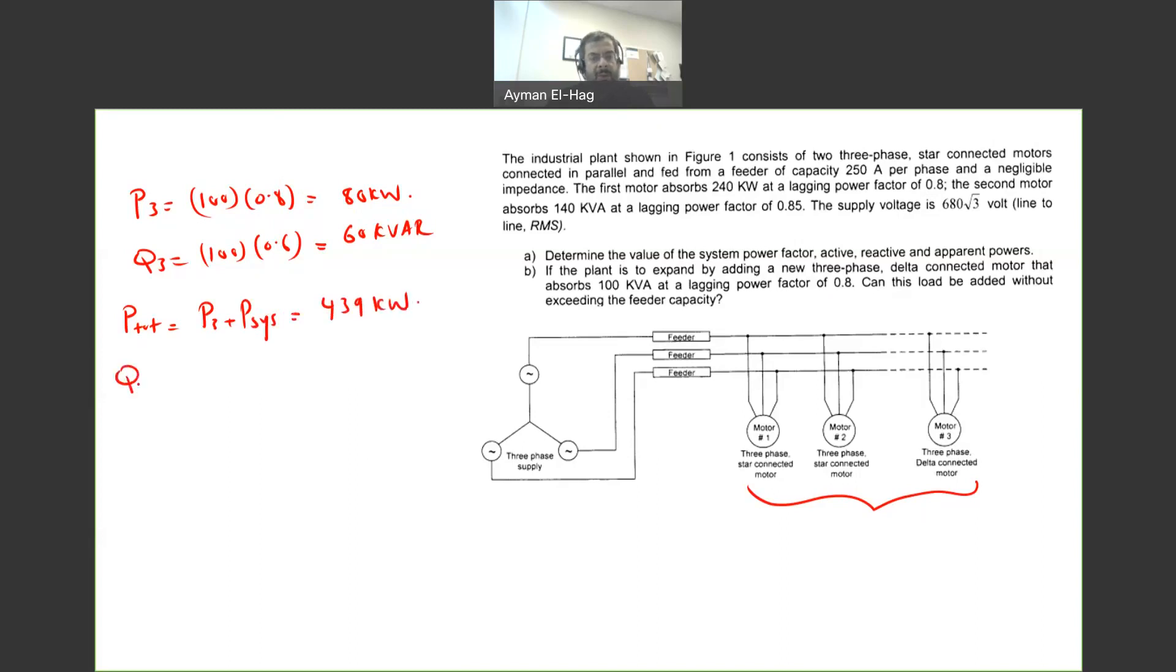And my Q total is equal to my Q3 plus Q of the system, and this gives me 313.75. From this, you can find your S. Your S total is equal to P total square plus Q total square, and this will give me a total kVA of 539.89 kVA.